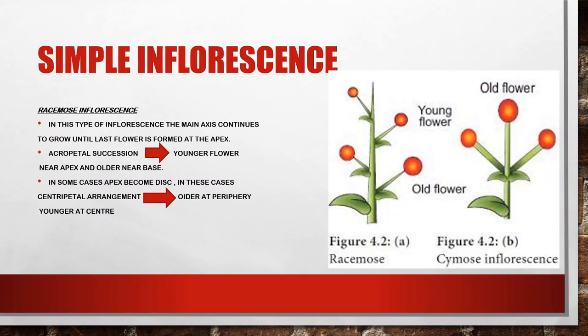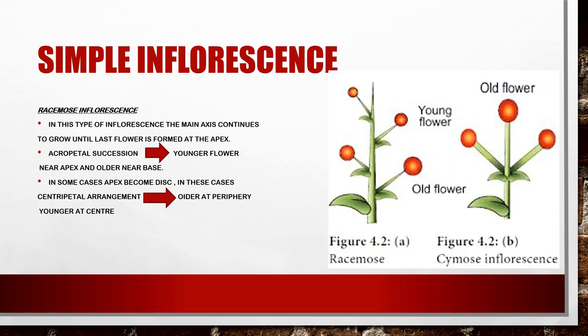In simple inflorescence, the first type is racemose inflorescence. In this type, the main axis continues to grow until the last flower is formed at the apex. The younger flowers grow near the apex and the older flowers are near the base. So the old flowers are below, near the base, and the younger flowers are near the apex.